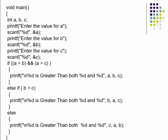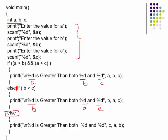In the program: declare variables, read their values, then specify the first condition — a greater than b AND a greater than c — and printf that a is greater than both b and c. The next else-if checks b greater than c and prints that b is greater than a and c. The final else part prints that c is greater than a and b.